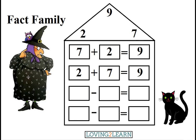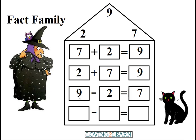Mildred says, I think I have the hang of this. This time we'll start with the 9. 9 minus 2 equals what? 7! That's right! We count backwards and take 2 away: 9, 8, 7. Or, we know 9 minus 2 equals 7.